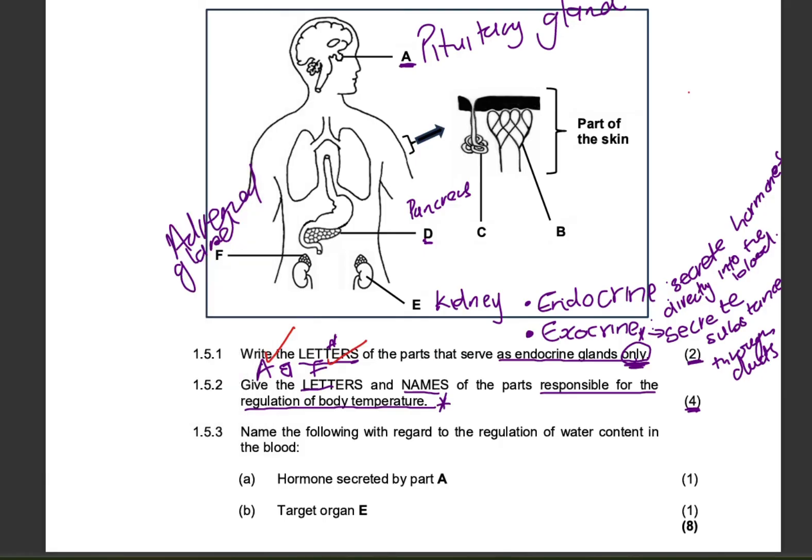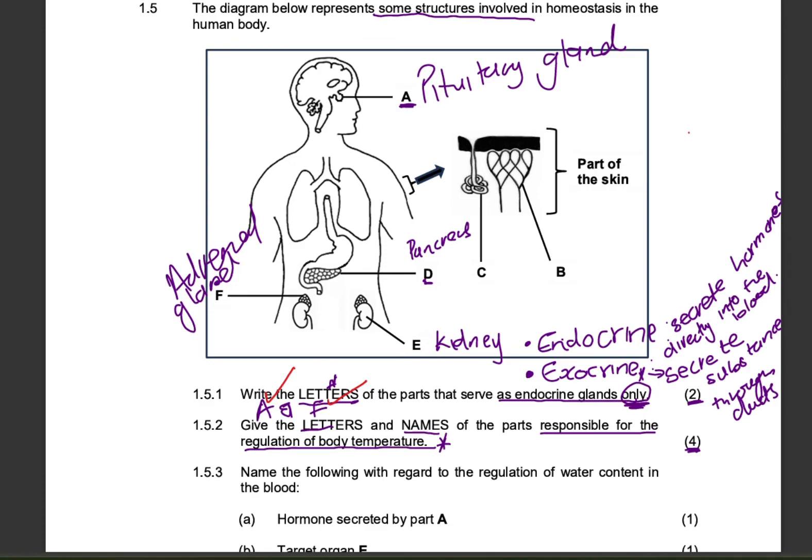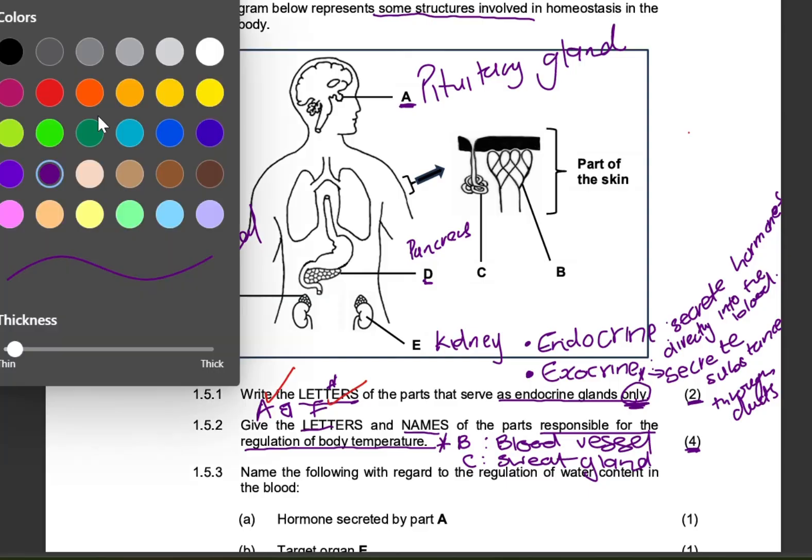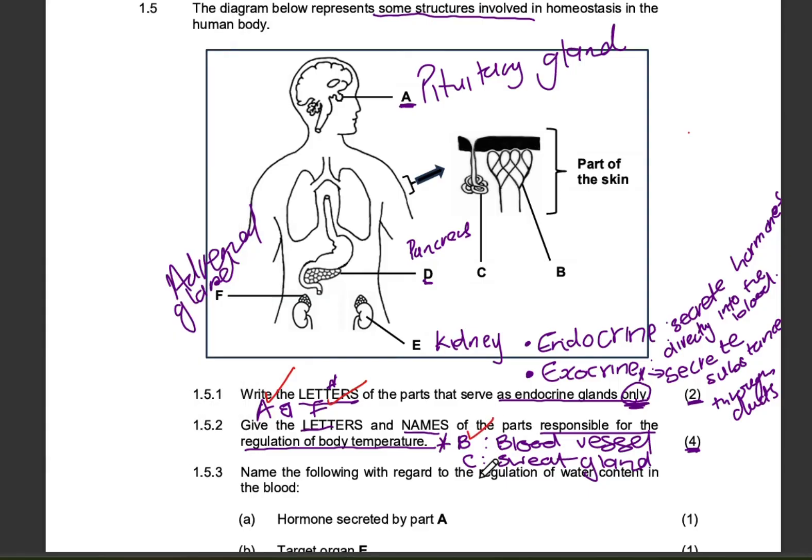The letters and names of the parts responsible for regulation will be C and B. Definitely responsible for temperature regulation. And B, let's start with B. B is the blood vessel. And the next letter is C. And C is the sweat gland. So, easy peasy for four marks. Let me show you how this will be marked. This letter will get a mark and a name. Correct letter and correct name.